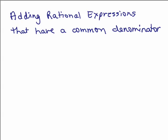Let's go over adding rational expressions that have a common denominator. Recall from arithmetic: if you had 3 elevenths plus 2 elevenths, imagine a pie cut into 11 pieces — you have 3 pieces plus 2 more pieces, giving you 5 elevenths. If you have a common denominator, you only write the denominator down once and add the numerators.